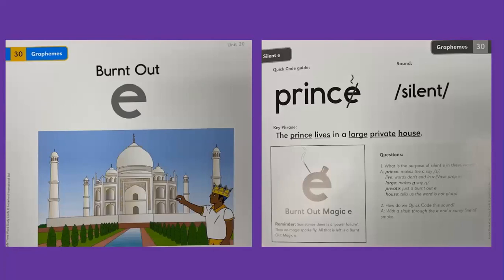All that is left is a burnt out magic E. When we quick code a magic E, we slash through the E and put a curvy line as a smoke.